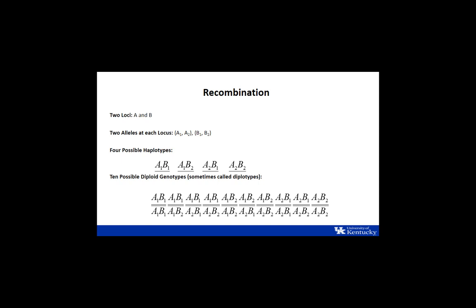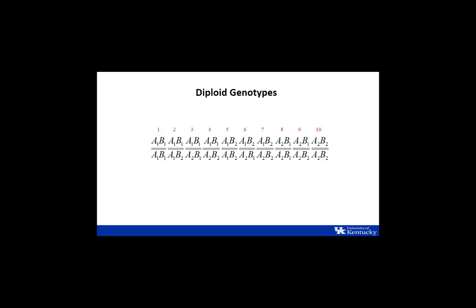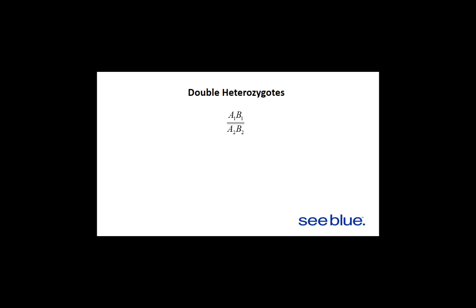Let me go a little bit more into recombination. We have two loci, A and B. At each locus, two possible alleles — A1, A2 and B1, B2. So two different loci, four possible haplotypes: A1B1, A1B2, A2B1, and A2B2. Sometimes these pairs are called diplotypes. Recombination is only detectable in double heterozygotes. We can't figure out whether there's a recombination or not except in these double heterozygotes, and so that limits some of our resolution to track via linkage analysis.